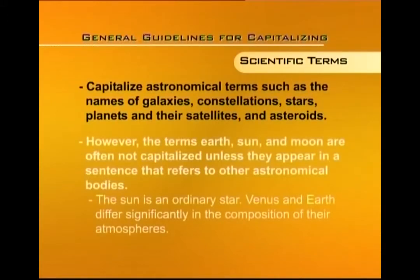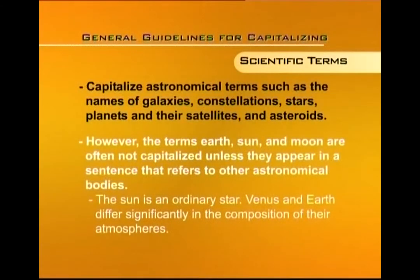You will capitalize astronomical terms such as the names of galaxies, constellations, stars, planets, and their satellites and asteroids. However, the terms earth, sun, and moon are often not capitalized unless they appear in a sentence that refers to other astronomical bodies. If referring to earth, sun, or moon in a list alongside other astronomical bodies, capitalize their first letters. Otherwise, use these as common nouns — for example, 'the sun is an ordinary star' but 'Venus and Earth differ significantly in the composition of their atmospheres.'